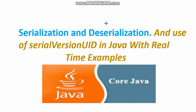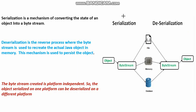In this video tutorial we will learn about serialization and deserialization, and we will check the use of serialVersionUID with a real-time example. In simple words, serialization is the process of converting an object and its state into a byte stream. This is the serialization process — we are converting an object into a byte stream, and then we can write that object into a file, memory, or database.